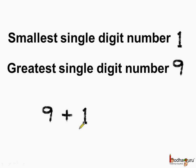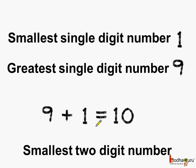Now let us add 1 to 9. What do we get? It is equal to 10. So we get 10, which is the smallest 2-digit number.